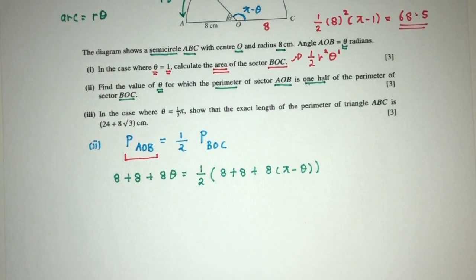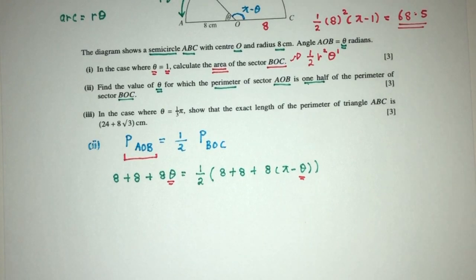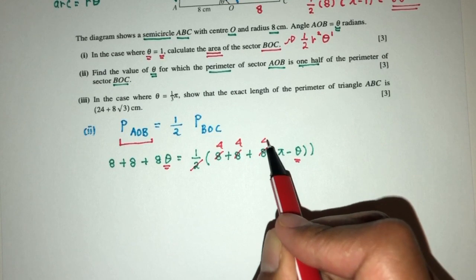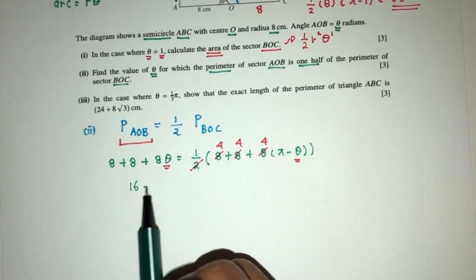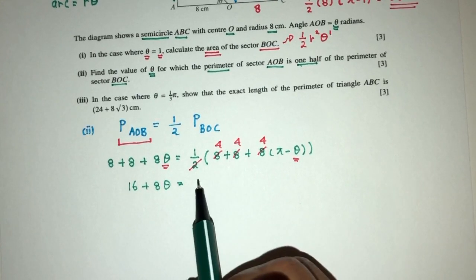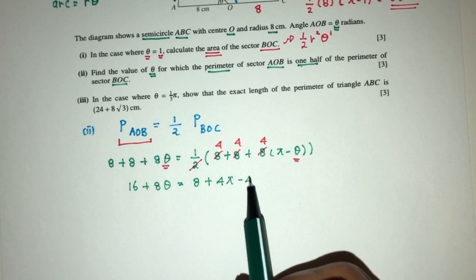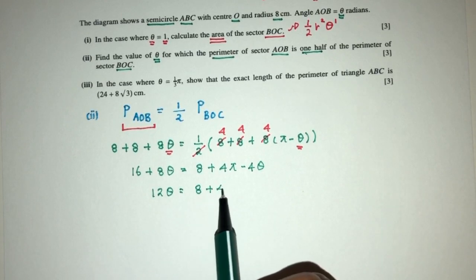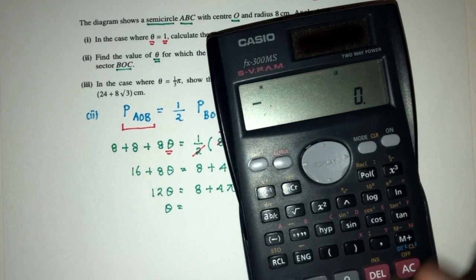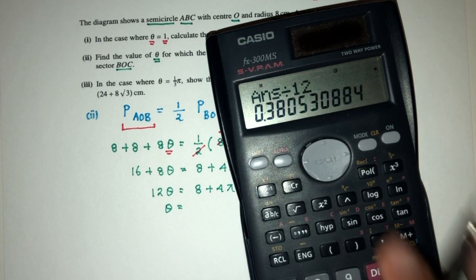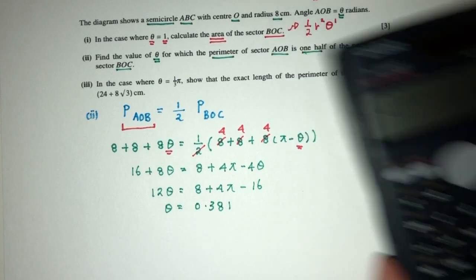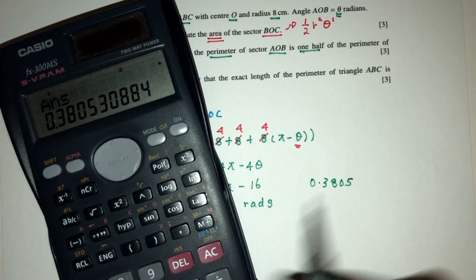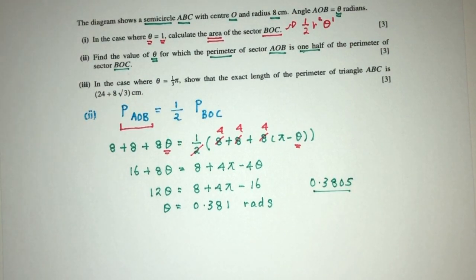So now we have this equation and we have to solve for the value of theta. We can divide through by 2: 8 plus 8 plus 8 theta equals 8 plus 4(pi minus theta). Expanding gives 4 pi minus 4 theta. Sending all the thetas to one side: 8 theta plus 4 theta equals 12 theta, and on the right: 8 plus 4 pi minus 16. So theta equals (4 pi minus 8) divided by 12, which gives 0.381 correct to 3 significant figures.